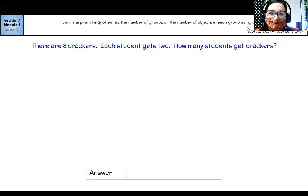Now, in this way, we're going to look at a little bit differently. This time there are eight crackers. Each student gets two. How many students get crackers? So this time we know how many there are total. We know how many each student will get, but we don't know how many students there are.